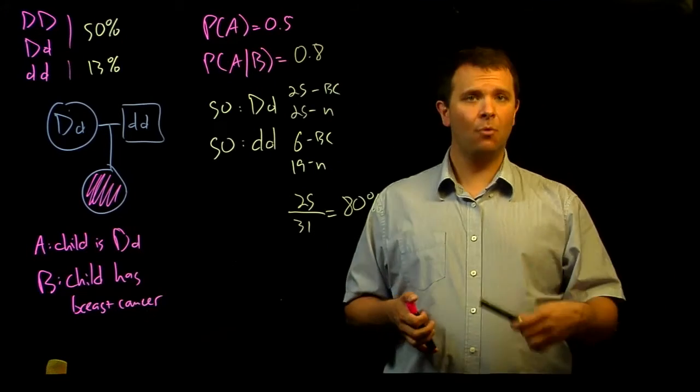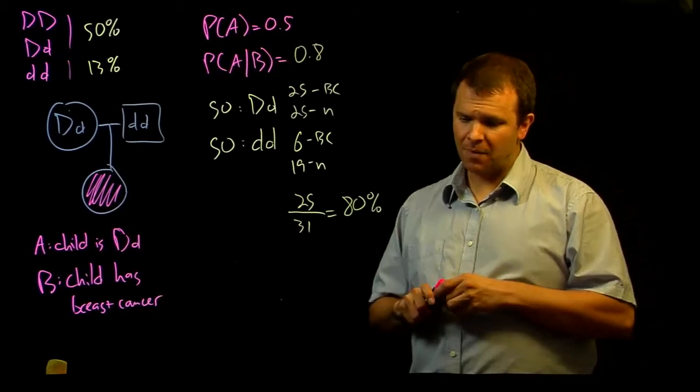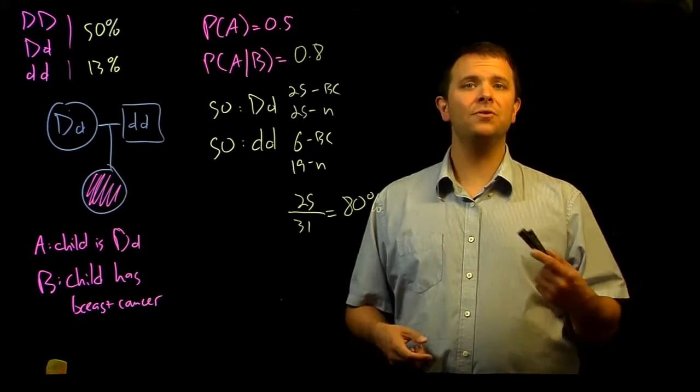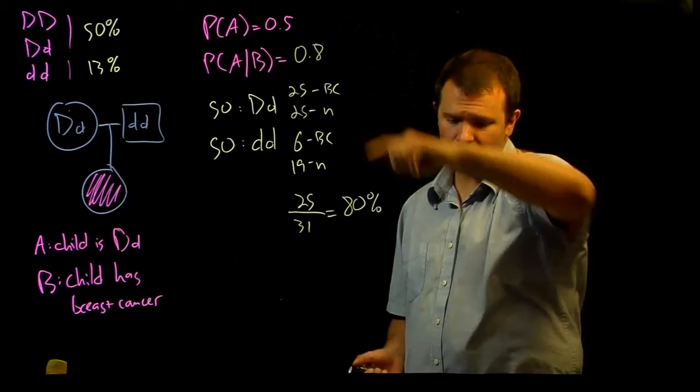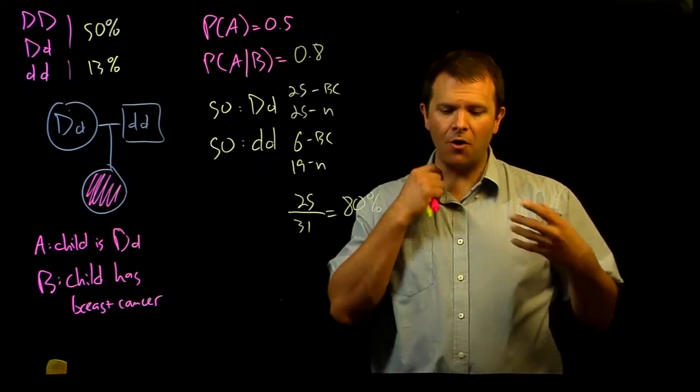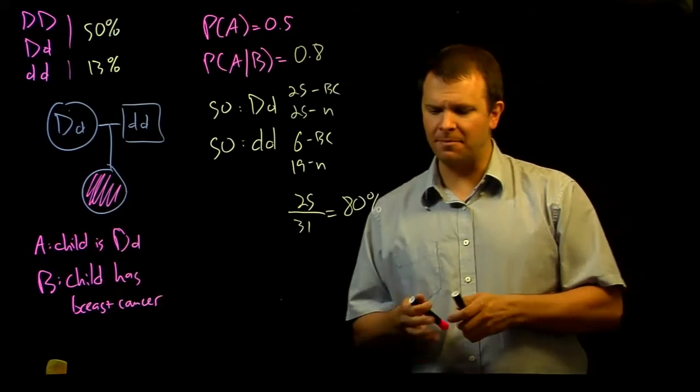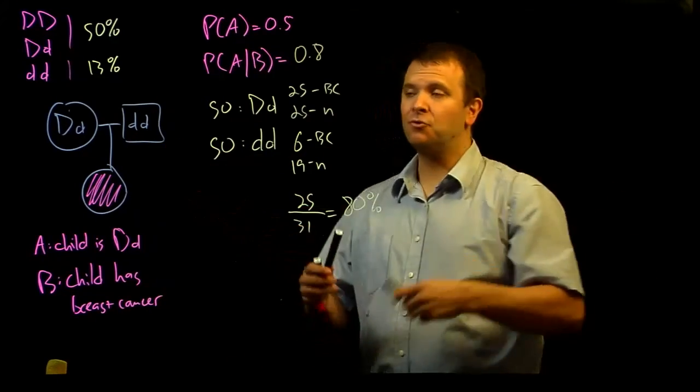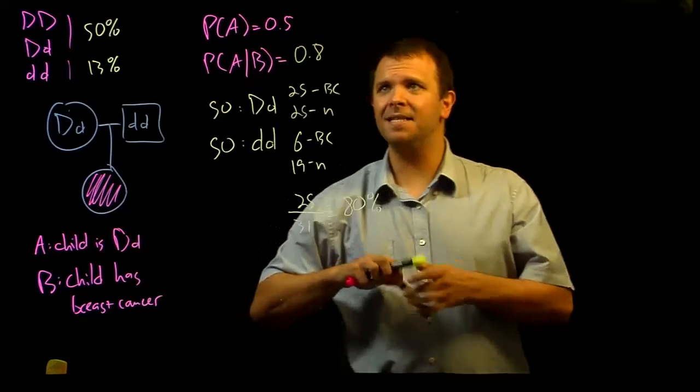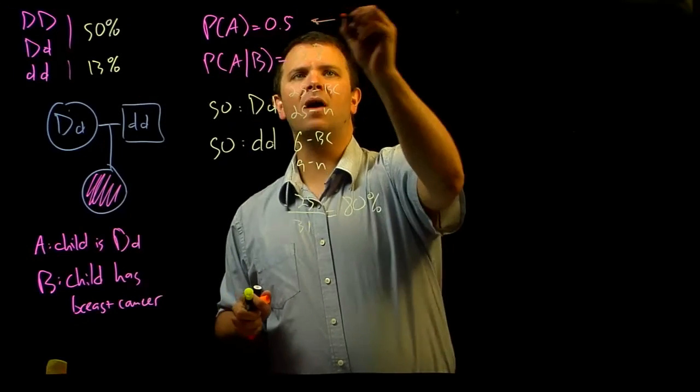Once we learned more information about the situation, that additional information changed our probabilities. We call the initial information, the probabilities just about transmission, just about incidence, we call these priors.